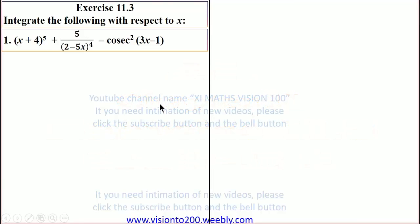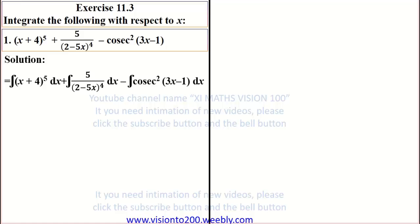Exercise 11.3: integrate the following with respect to x. Question number 1: (x + 4)^5 + (5/(2 - 5x))^4 - cosec²(3x - 1). Solution: we split this as integral of (x+4)^5 dx, plus integral of (5/(2-5x))^4 dx, minus integral of cosec²(3x-1) dx.